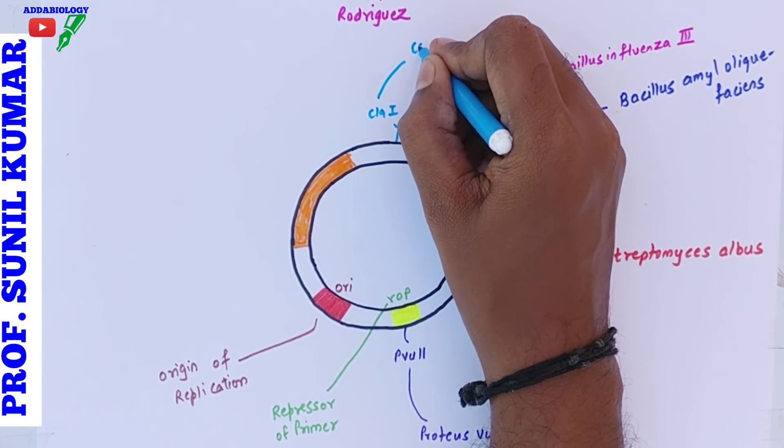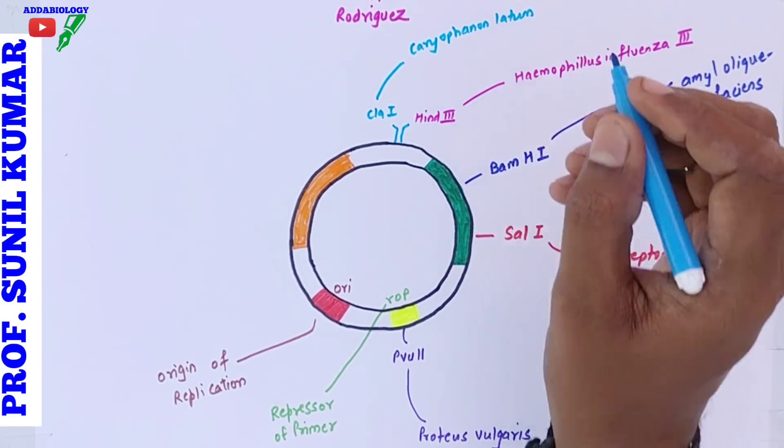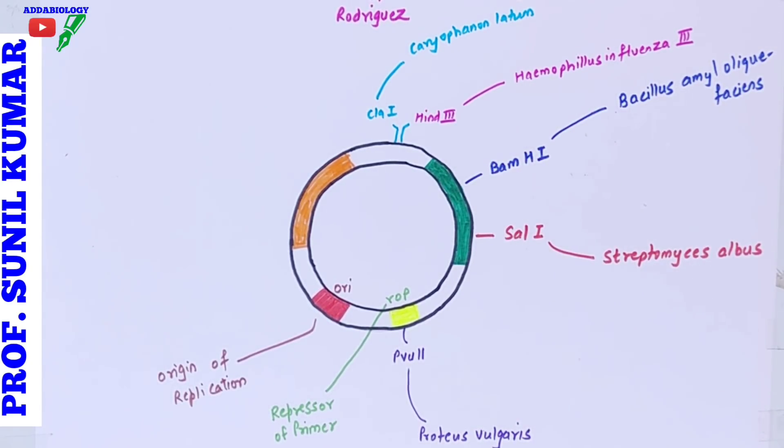We have another one, ClaI. C is the genus which indicates Caryophanon, and la stands for latum.